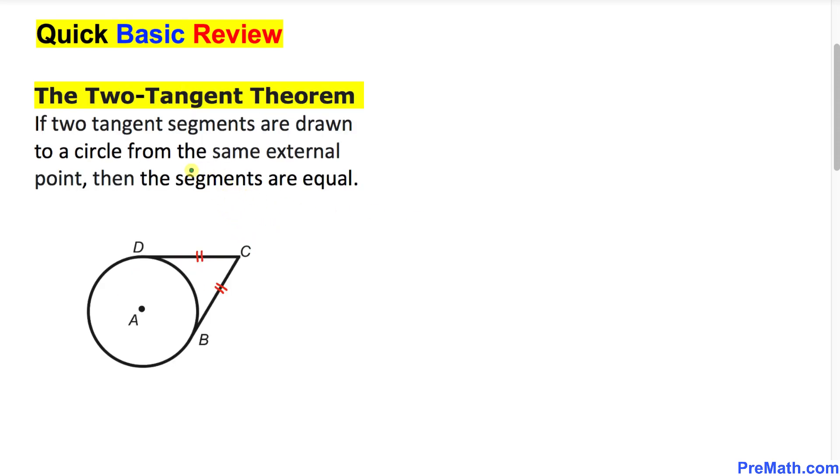Now let's recall the two tangents theorem. If two tangent segments are drawn to a circle from the same external point, then these segments are equal in length. In this example, BC and CD are tangents to this circle, so these two line segments BC and CD are equal in length.